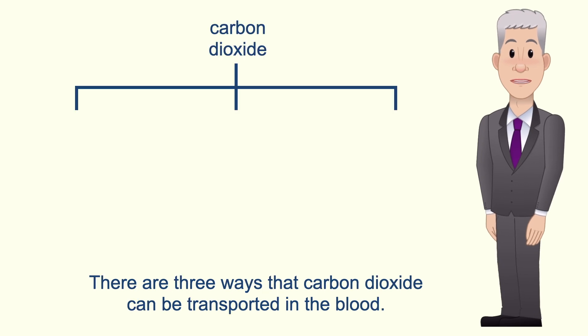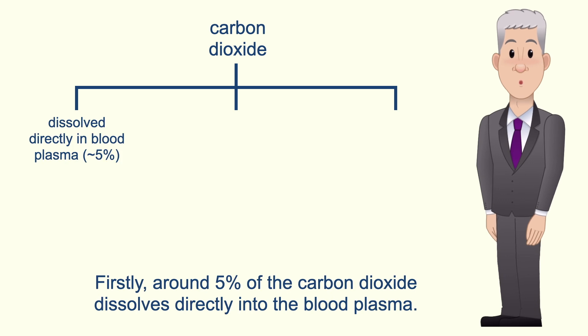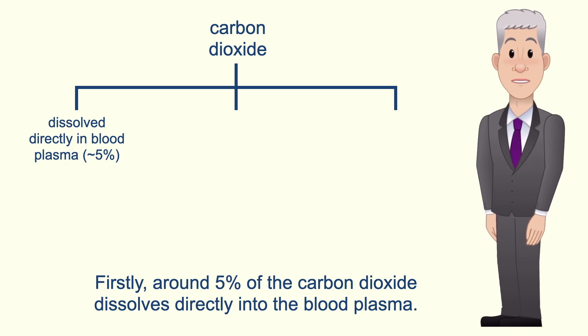There are three ways that carbon dioxide can be transported in the blood. Firstly, around 5% of the carbon dioxide dissolves directly into the blood plasma.